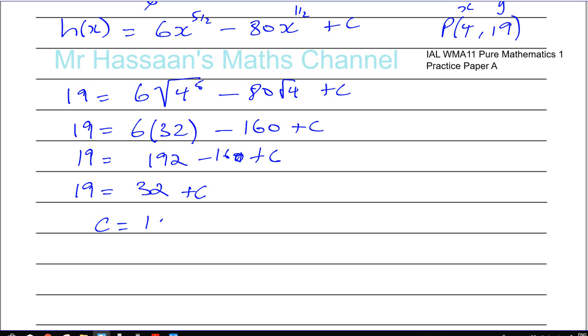So C is equal to 19 minus 32. So C is equal to, you've got 19, 29, that's 10 plus 3, that's going to be a minus 13. Yeah, that's right, 19 minus 32 is minus 13.